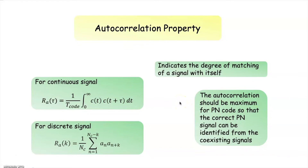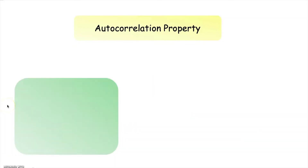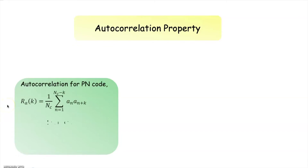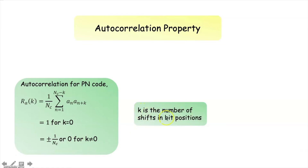The autocorrelation for a PN code should be maximum so that the correct PN signal can be identified from the coexisting signals. The autocorrelation for a PN code will be equal to 1 when k is equal to 0, and will be equal to plus or minus 1 by N_c or 0 when k is not equal to 0, where k is the number of shifts in bit positions.